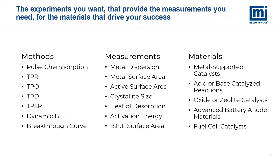The AutoChem 3 performs pulse chemisorption and temperature program experiments such as reduction, oxidation, desorption, and surface reactions. It can also do dynamic BET and breakthrough. The type of information we get from these methods includes metal dispersion, metallic surface area, active surface area, crystallite size, heat of desorption, activation energy, and BET surface area. Typical materials of interest are metal-supported oxide, zeolite, and fuel cell catalysts, as well as advanced battery anode materials.